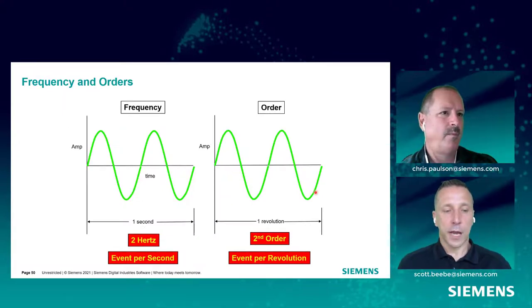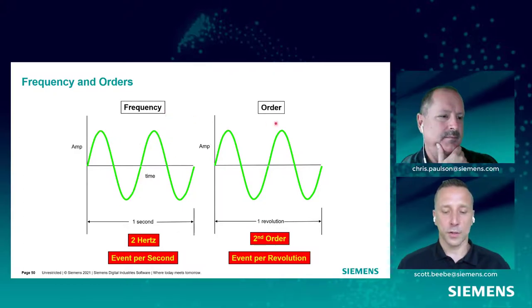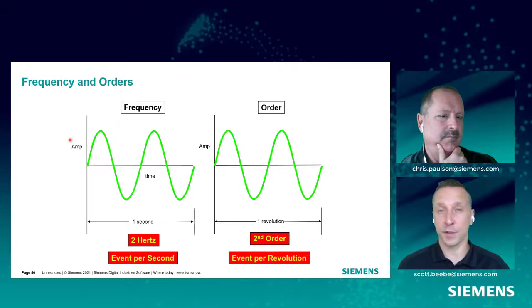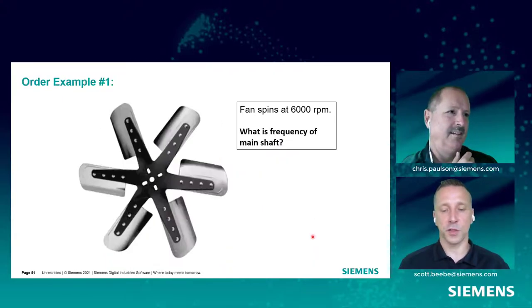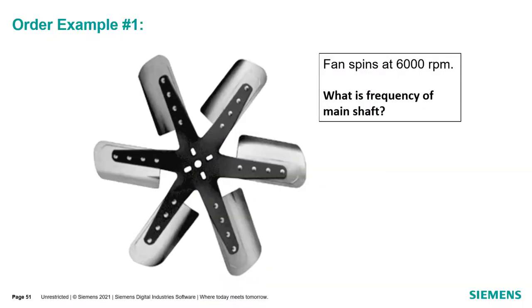To put a bow on this: when we look at frequency, we can think of orders as events per revolution. Frequency is always events per second — hertz is one over second, so it's how many times per second something happens. When we talk about order, we're talking events per revolution, and those events per revolution are based on the reference shaft. I'm going to let you see if you can figure some things out with a fan blade and some more real-world examples.